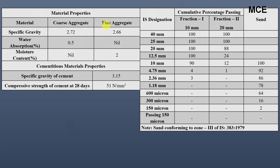The material properties are: specific gravity 2.725 for coarse aggregate and 2.66 for fine aggregate; water absorption 0.5% for coarse aggregate and nil for fine aggregate; moisture content nil for coarse aggregate but 2% for fine aggregate; specific gravity of cement is 3.15; compressive strength of cement at 28 days is 51 N/mm². The sand conforms to Zone 3 of IS 383:1979.